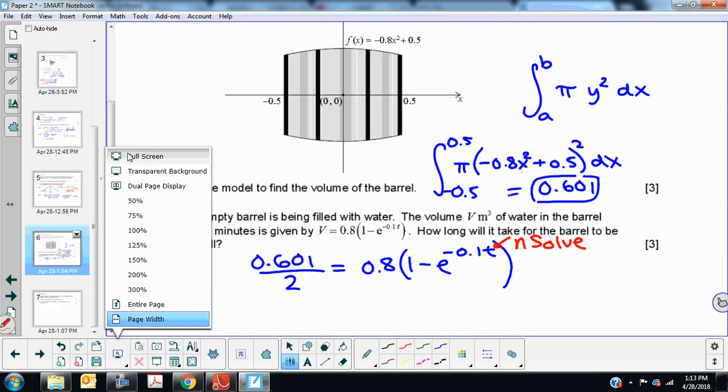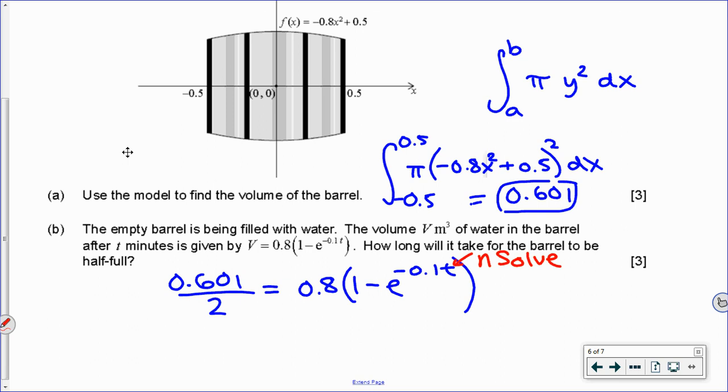And so when I'm answering the question, I just make sure I'm giving units, I'm rounding to 3 sig figs, so t equals 4.71 minutes. And that's it for this question.